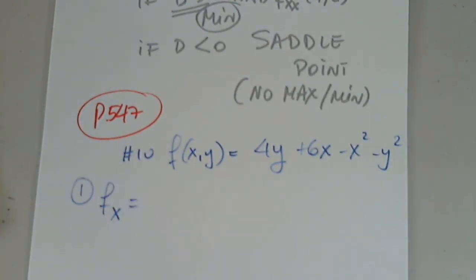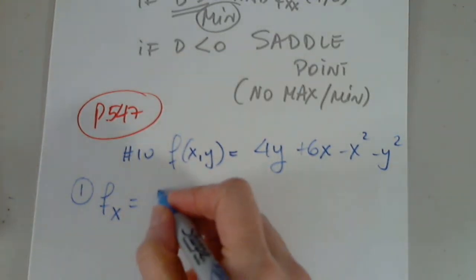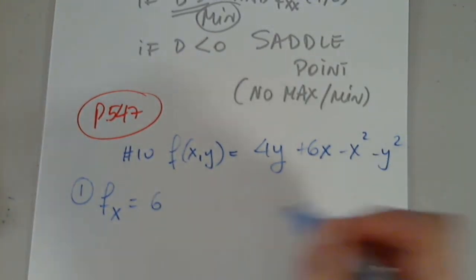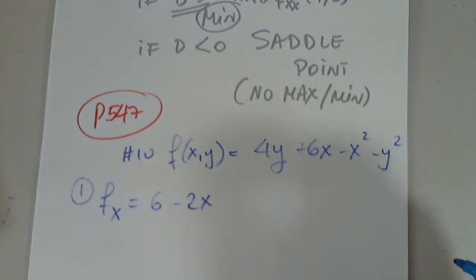fx: I differentiate with respect to x, keeping y fixed. This is fixed, it's 0. I'm differentiating with respect to x, so this is 6. I'm differentiating with respect to x, so this is negative 2x. I'm differentiating with respect to x, nothing.